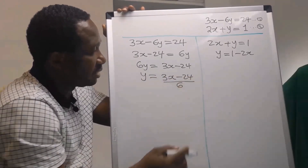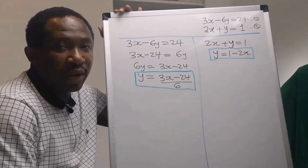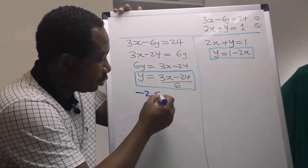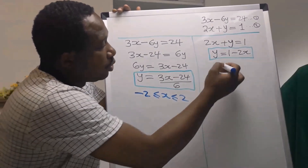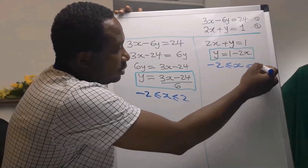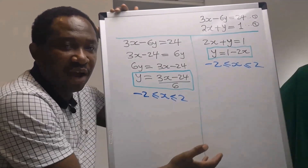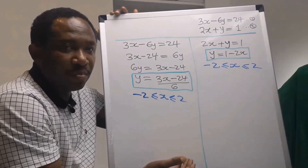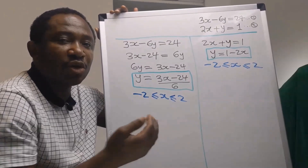The next step is to choose a range of integers. I'll choose between minus two and two for both equations. You can choose between minus five and five, minus three and three, or even from zero. At the end of the day, we are going to extrapolate the line to cover other ranges of integers.